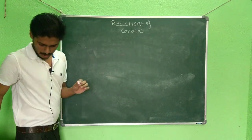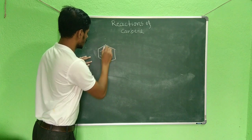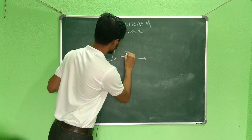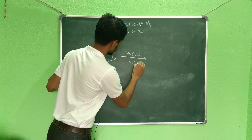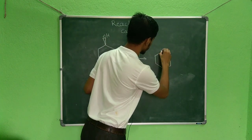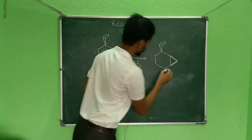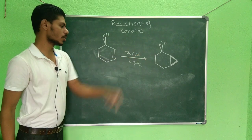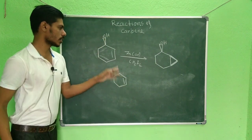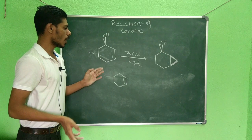An important example: if you take an allylic alcohol and treat it with a zinc-copper couple in the presence of CH₂I₂, you will get a cyclopropane ring. In this case it is a diastereoselective reaction, and the cyclopropane forms on the same side as the OH group. The OH group acts as a directing group, and this reaction is 100 times faster than the same reaction on a simple alkene without a hydroxyl group.